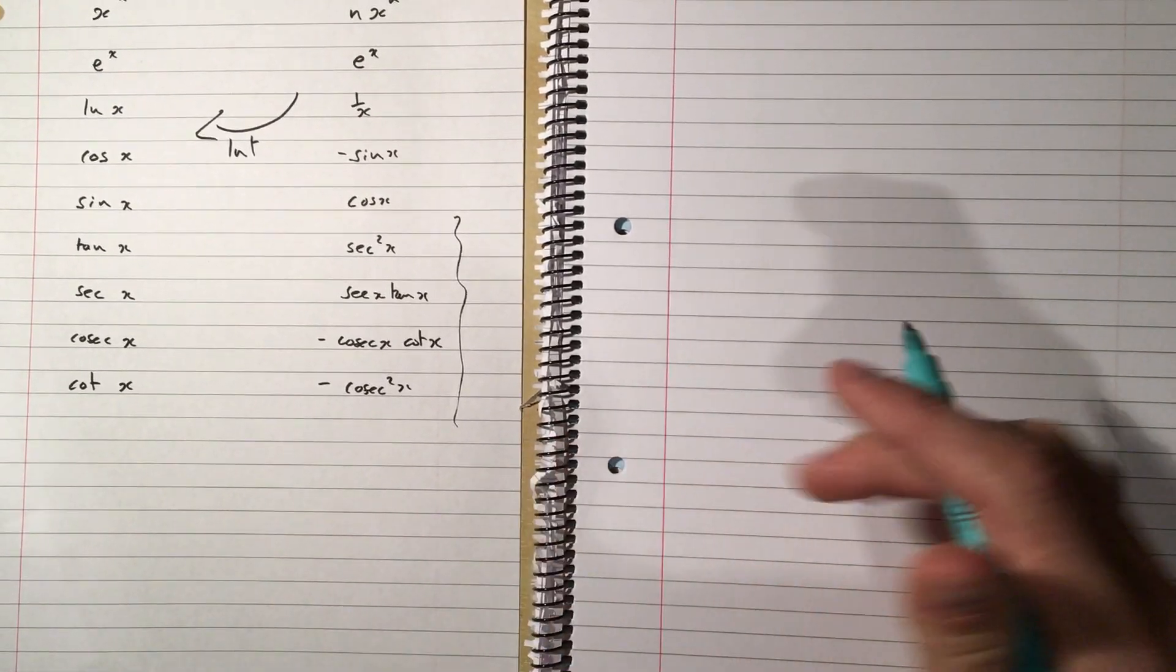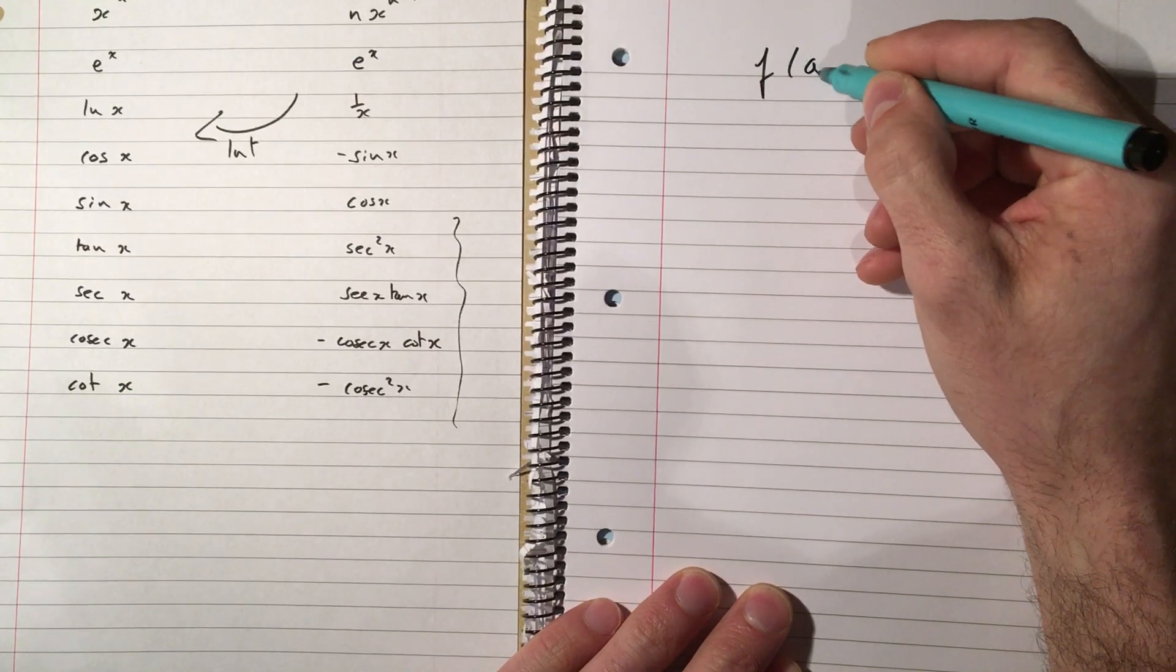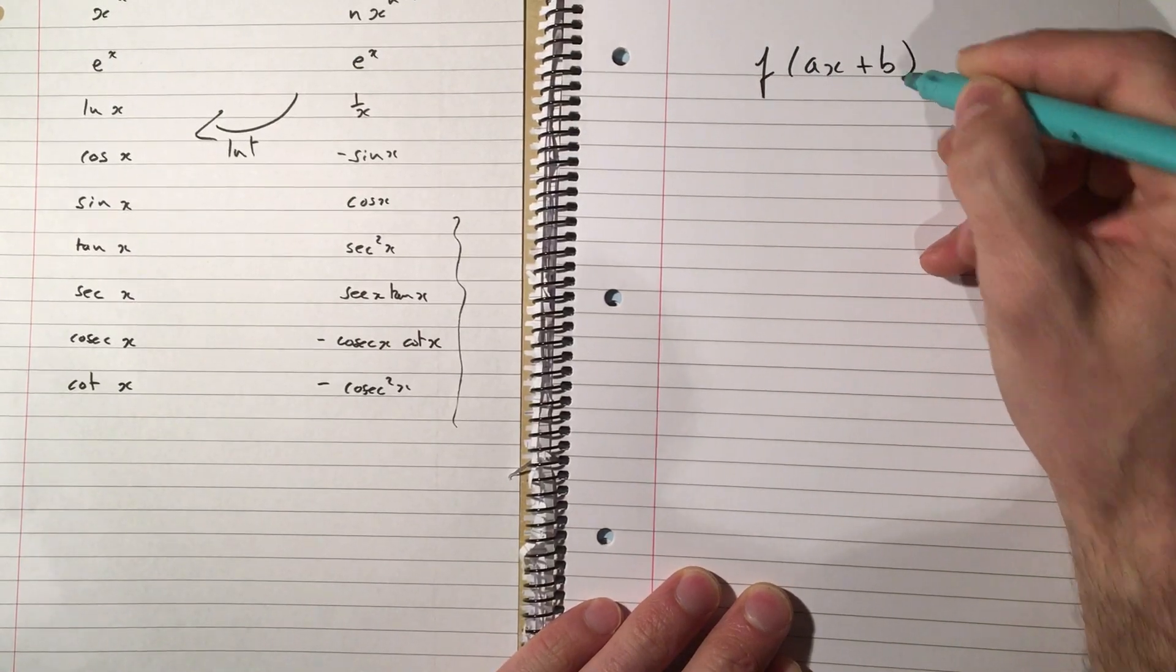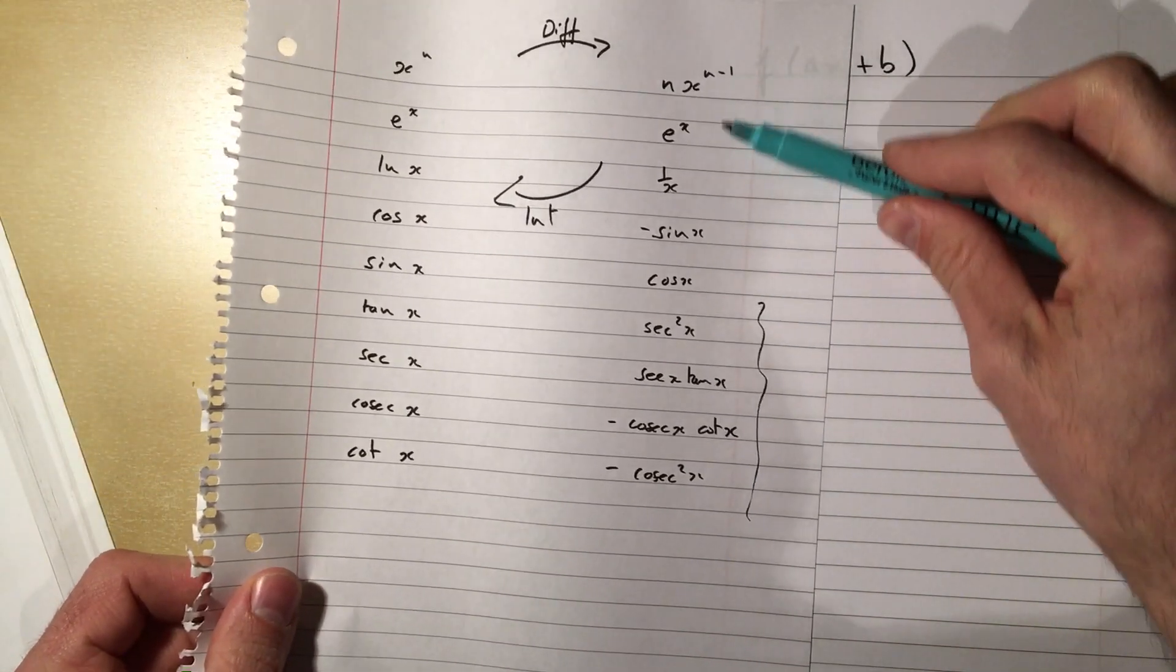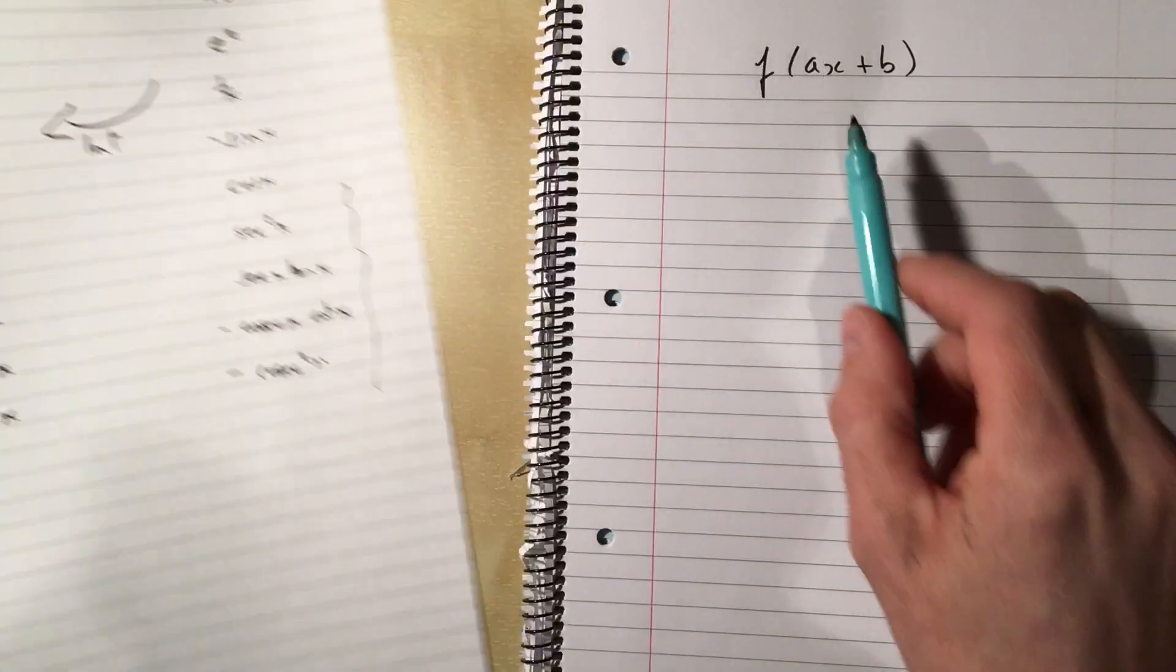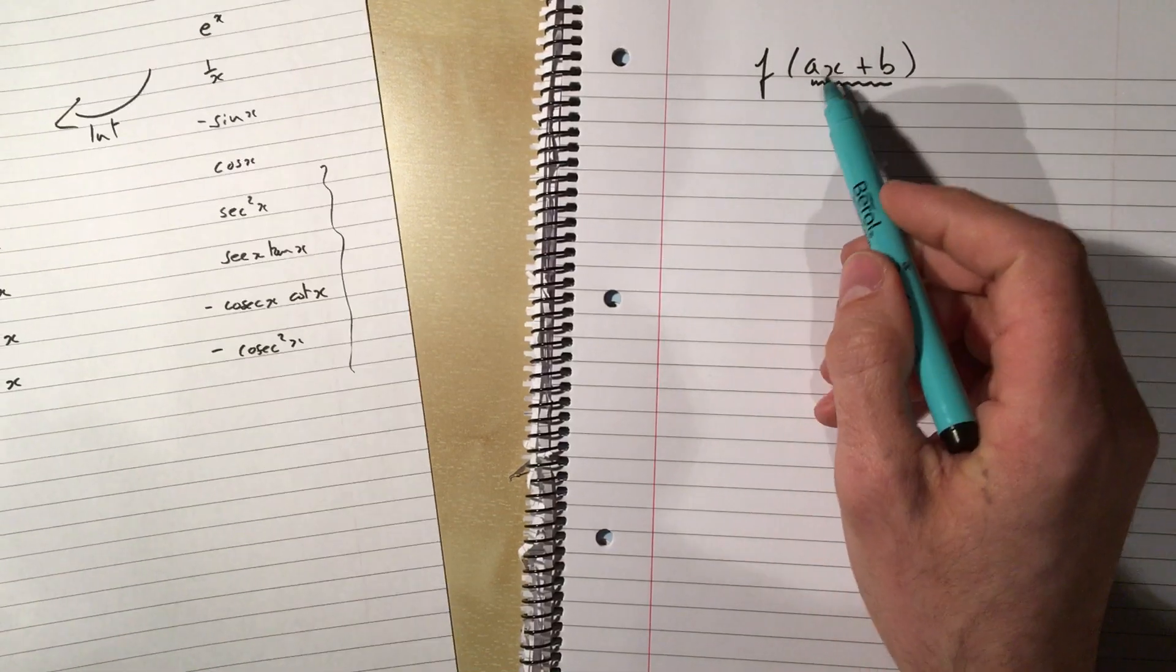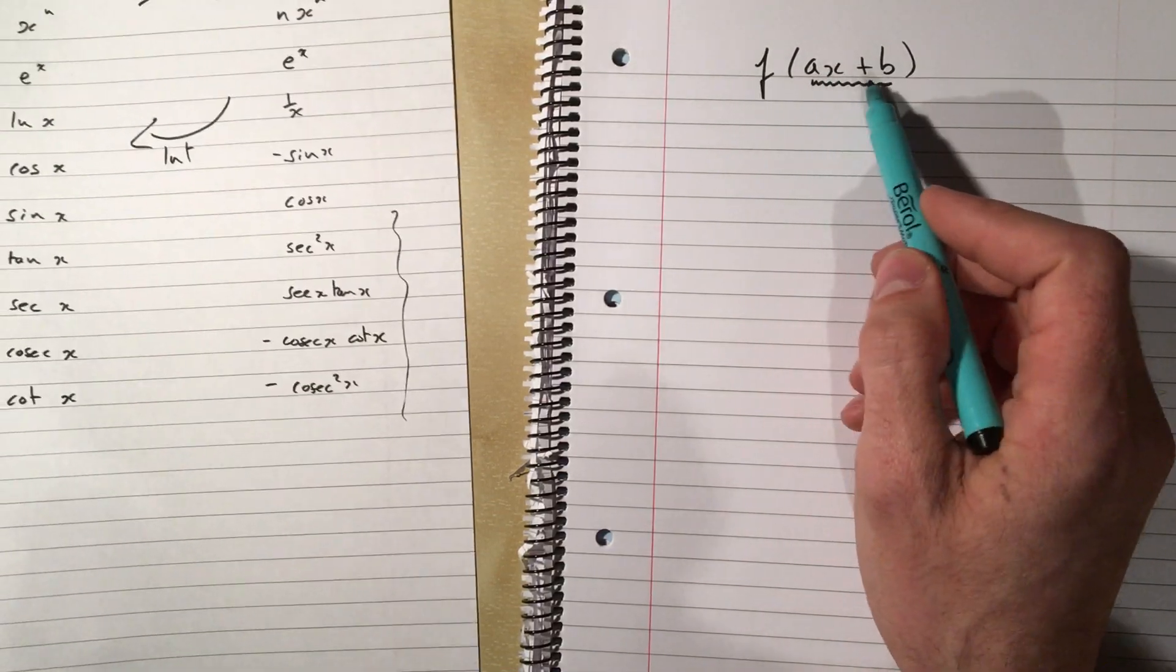Starting section 11.2, we're looking at integrating things of this form. We've got our list here, anything that looks like this we can integrate. Now what if instead of an x, I've got a linear expression in x? It's not just an x, it's an ax plus b.